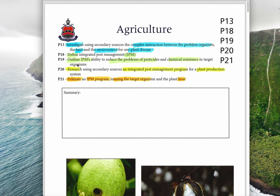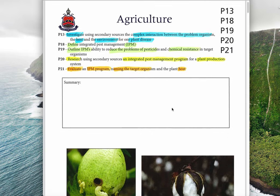Next, we need to define IPM. Then we need to outline IPM's ability to reduce the problem of pesticides and chemical resistance occurring. For P20, we need to research an IPM program for a plant production system. It's basically the same as what we did in animal production, but a different example. And lastly, we've done this already in animal production, but we need to evaluate an IPM program naming one target organism and the host of the plant.